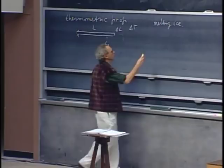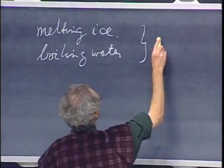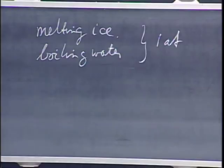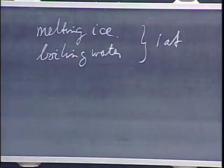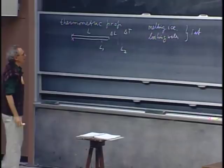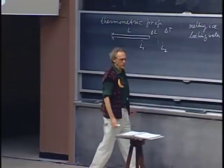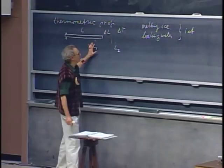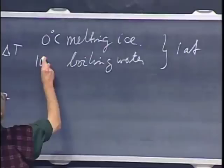Then I could put the whole thing in boiling water, and I do that at one atmosphere pressure, and then I say the length is L2. Those are my reference points for my temperature scale. Celsius did just that — the idea that he used melting ice, which is now called zero degrees centigrade, and he used the boiling point of water, which was his hundred degrees centigrade. He was a Swedish astronomer, and in 1742 he introduced this temperature scale.